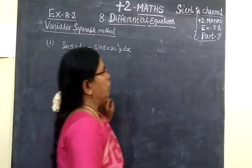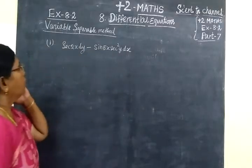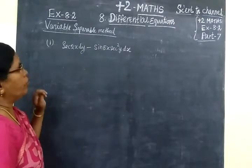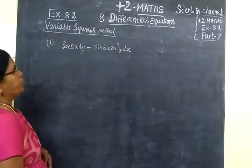So, this is 8.2 Part 7. Part 6, we will get 8.1. Part 7 is 8.2, Variable Separable Methods.